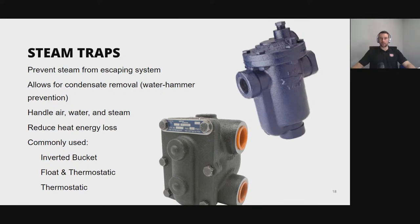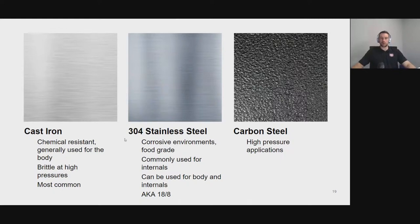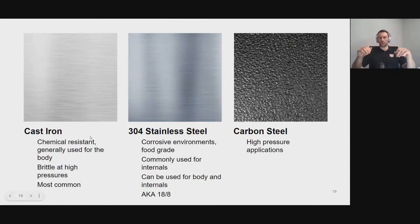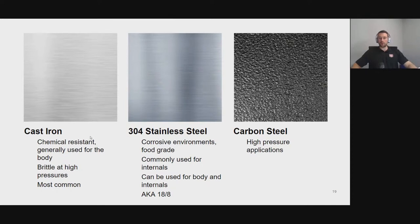The common types of steam traps are the float and thermostatic (F&T), the inverted bucket, and the thermostatic. Steam trap bodies are mainly going to be cast iron — it's cheap, chemically resistant, and fairly durable, but brittle at high pressure, so high-pressure applications may require carbon steel. The internals are probably going to be stainless steel to prevent corrosion over time. In a food-grade environment, you'd need stainless steel throughout to prevent corrosion from passing into food, though those traps are very expensive.